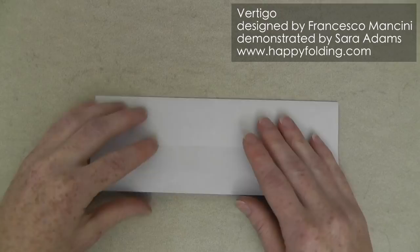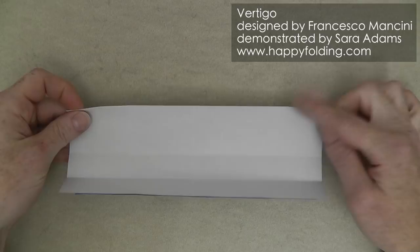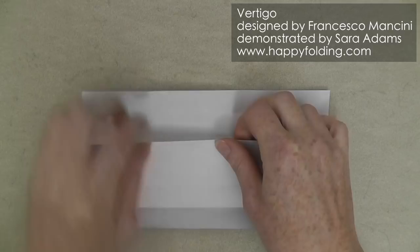We also want to half this distance. For that, I'm going to take this edge and align it with this crease line. And, of course, repeat on the other side.